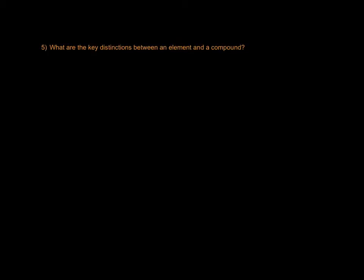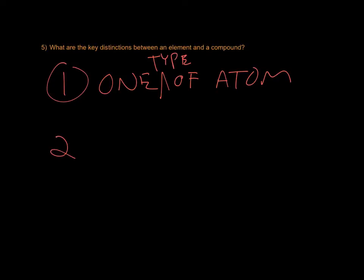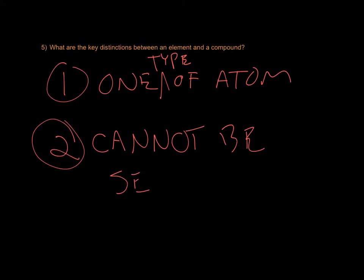The distinctions between an element and a compound. There's basically two key distinctions. An element is made of one type of atom only, and cannot be separated by ordinary chemical means. You can use nuclear fission or fusion to change an atom, but it cannot be separated by chemical means. A compound has more than one type of atom and can be separated chemically. Those are the distinguishing factors between an element and a compound.